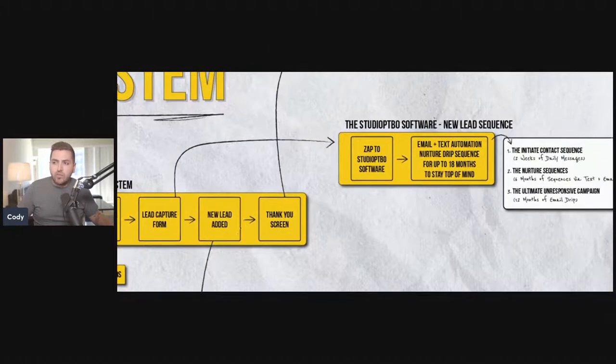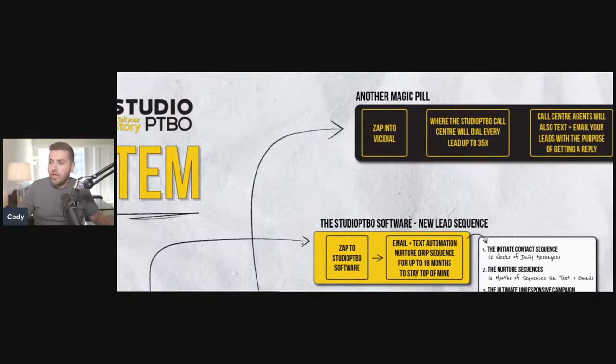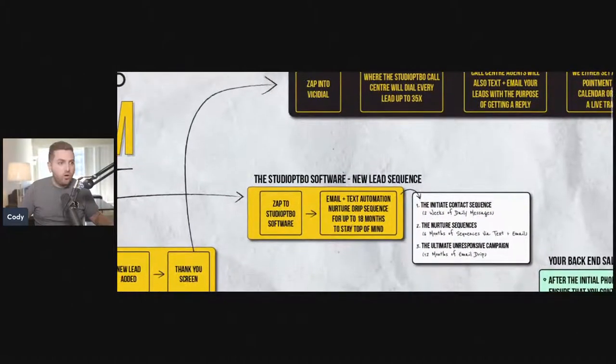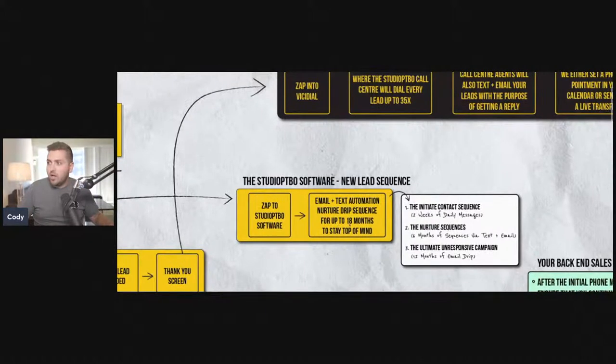When they go to the thank you screen, we're zapping them to the Studio PTBO software. This is where email and text drip campaigns are built out over 18 months. We have three different sequences: initiate contact sequence with two weeks of daily messages, the nurture sequence with six months of messages, and if they still don't respond, an ultimate unresponsive campaign with 12 months of email drip campaigns that are all built out automatically.